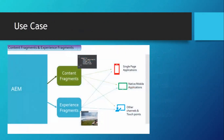This is the use case of content fragments and experience fragments. As mentioned before, content fragment output is in JSON format and experience fragment output is in HTML format. So both can be rendered to single page applications, native mobile applications, and other channel touch points.